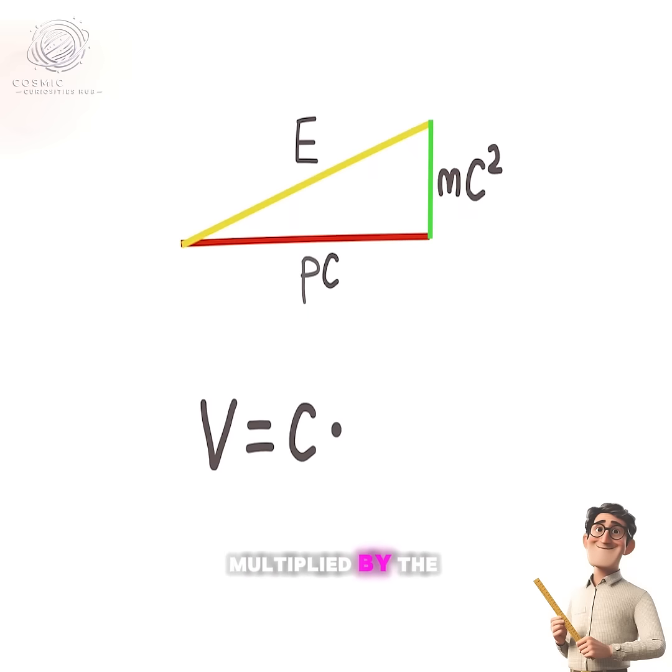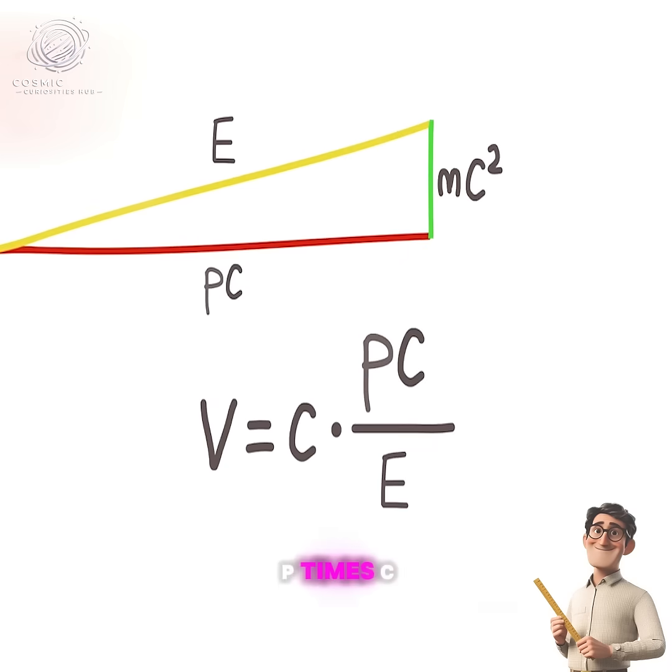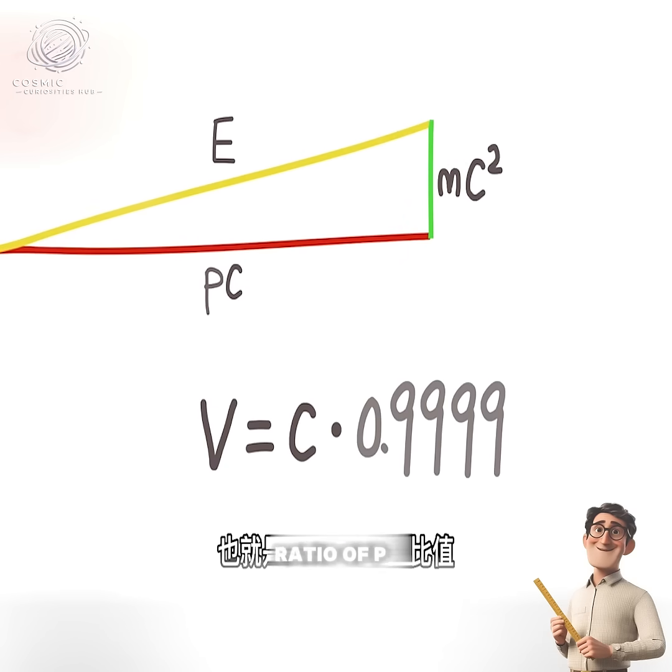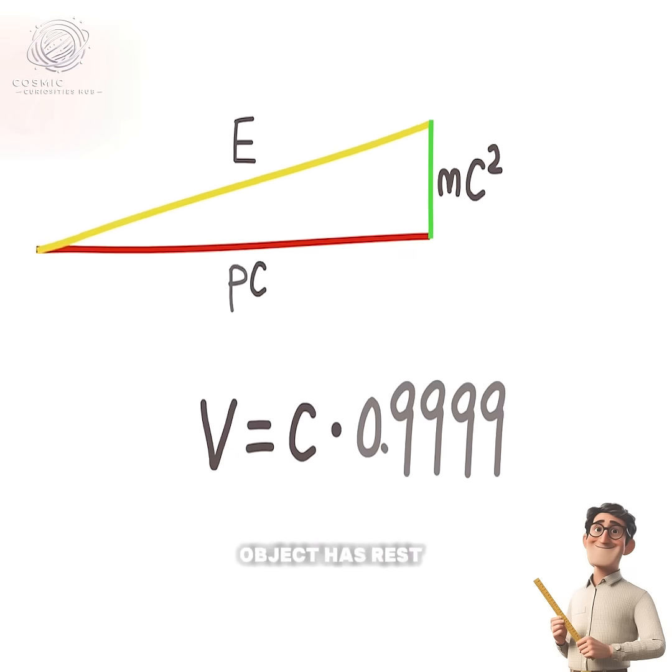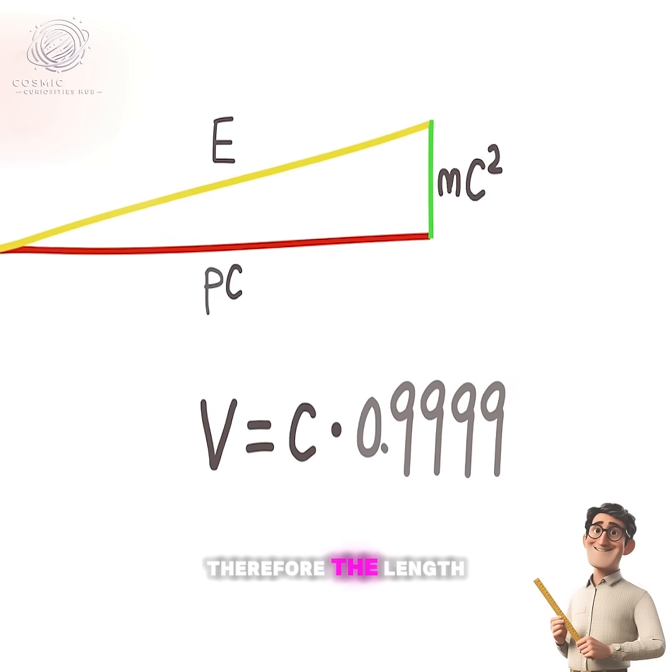If the object's momentum increases, pc will get closer and closer to energy E. That is, the ratio pc/E approaches one. At this point, the object's speed approaches the speed of light. However, since this object has rest mass, the length of side pc is always shorter than side E.